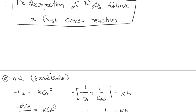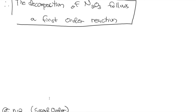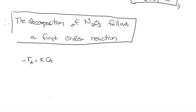If there is a follow-up question asking to write the rate equation, since we know it follows first order, the rate equation is negative rA equals k times CA. Substituting our k-value: negative rA equals 6.254 times 10 to the negative 4 times CA. This is our final rate equation.